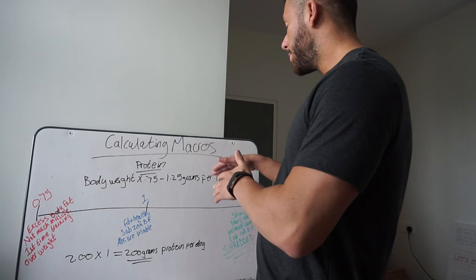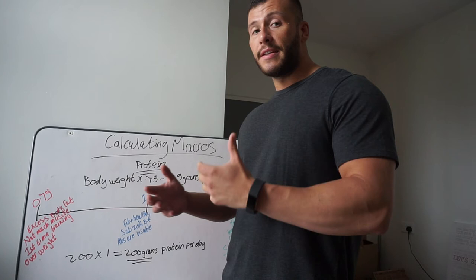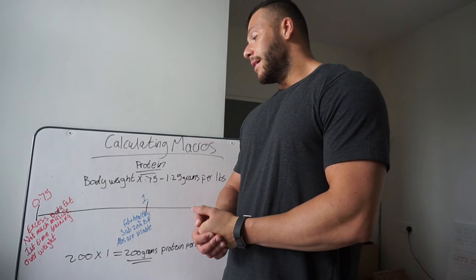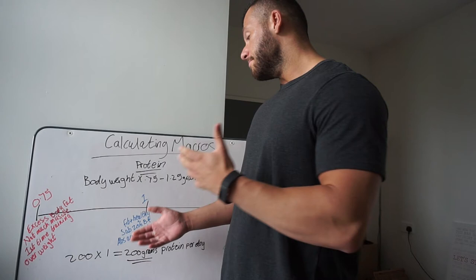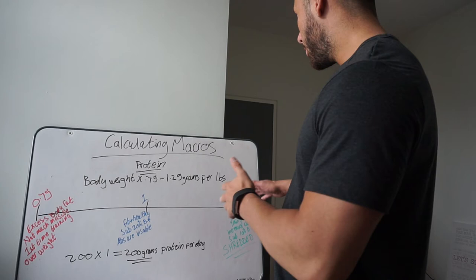We're going to use 0.75 for somebody with excess body fat, not much muscle, first time training, they're overweight, obese possibly, and made some unhealthy lifestyle choices. Number one would be someone who's fit and healthy, they're below 20% body fat, their abs are visible but they're not quite there.